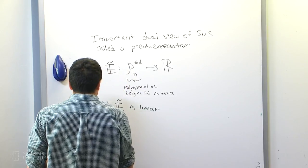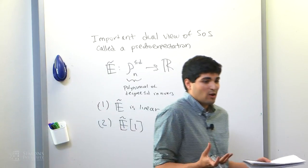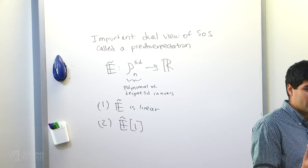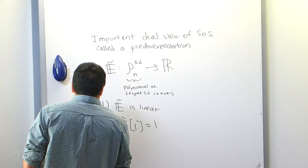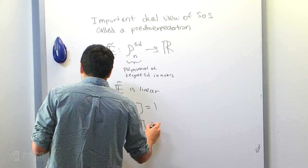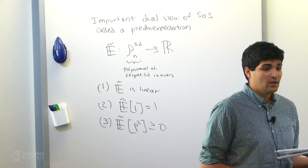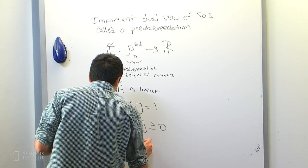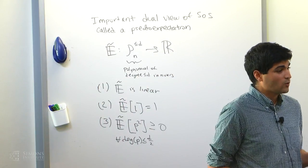Another property: if you give me the polynomial 1 — which is a polynomial in variables x1 through xn when you think about a distribution on those variables — the expectation of 1 must be 1, so ẽ(1) = 1. Now, here's where all the action really is: whenever you give me a polynomial p and I look at the pseudo-expectation of its square, it must be non-negative. This is only going to make sense as long as the degree of p is at most d/2, since the pseudo-expectation operator is only defined up to degree-d polynomials.